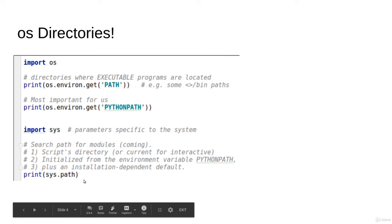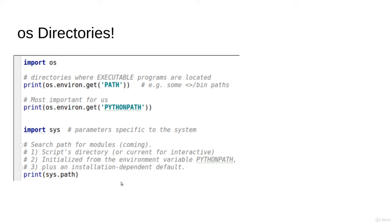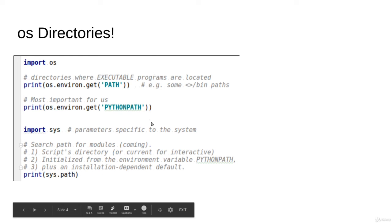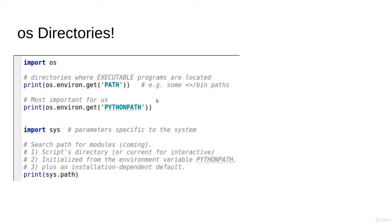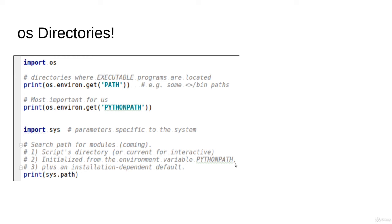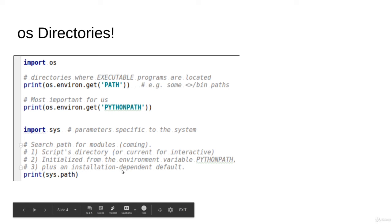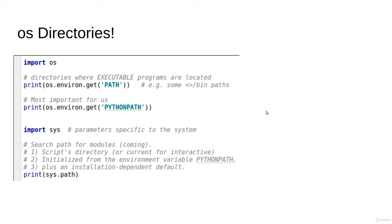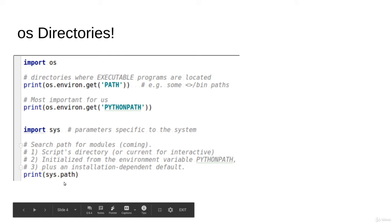The third one involves importing sys, which holds parameters specific to the system. sys.path is a very critical path, as we will learn in the next sessions. sys.path consists of three types of directories: first, the script directory — the directory of the script currently being run is at the head of the list; second, directories copied from os.environ.get('PYTHONPATH'); and third, installation-dependent directories added when Python was installed for its standard libraries. All of them are in sys.path, which is a large list of critical directories.